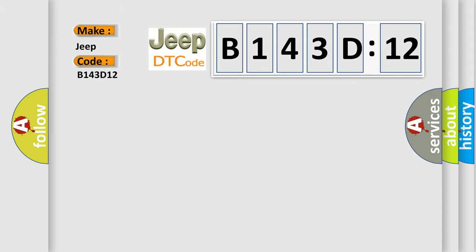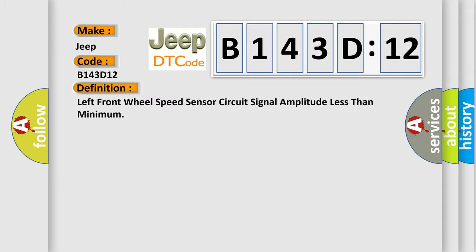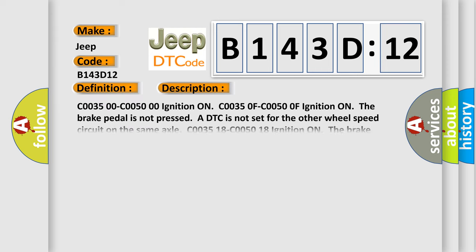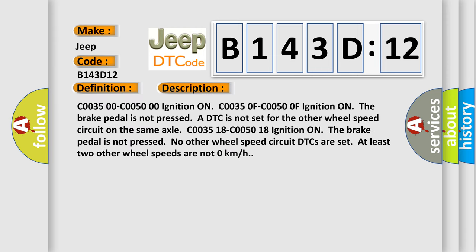The basic definition is: left front wheel speed sensor circuit signal amplitude less than minimum. And now this is a short description of this DTC code. C003500C00500 ignition on, C00350F C00500F ignition on, the brake pedal is not pressed. A DTC is not set for the other wheel speed circuit on the same axle. C003518C005018 ignition on, the brake pedal is not pressed. No other wheel speed circuit DTCs are set, at least two other wheel speeds are not 0 km per hour.